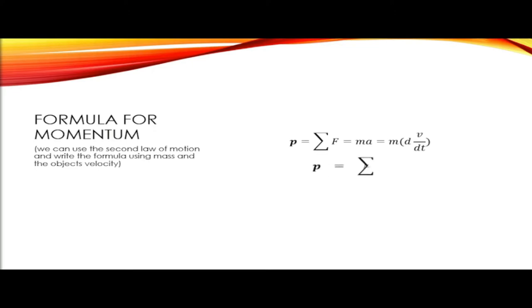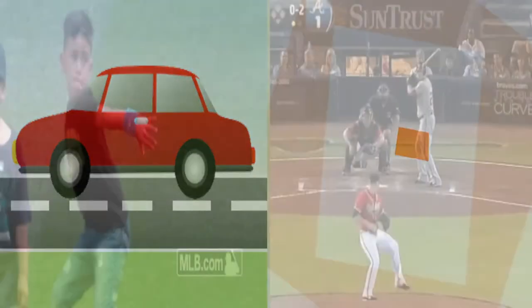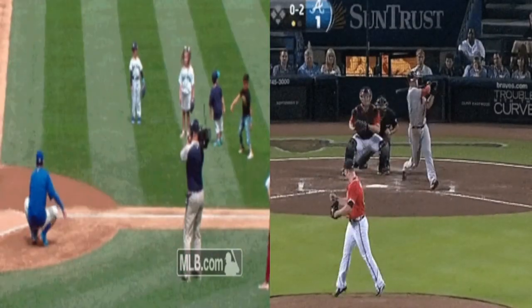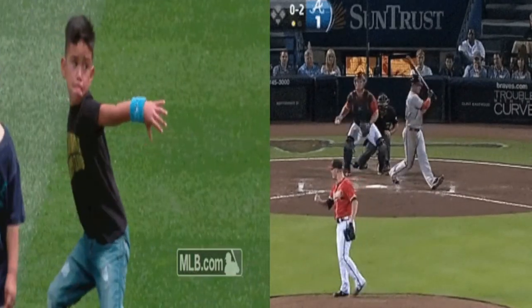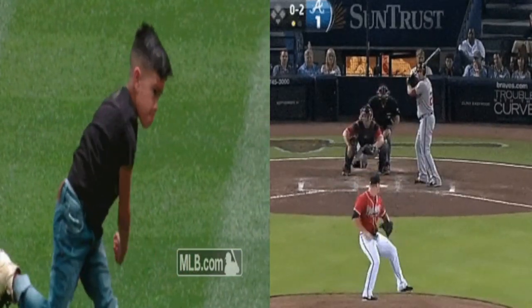We can compare the momentum of several objects. A boy and a major leaguer can throw a pitch, but there is a big difference in their momentum. This difference is due to the big difference in the velocity of their pitches.